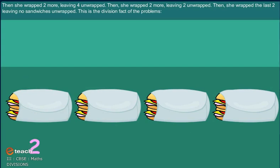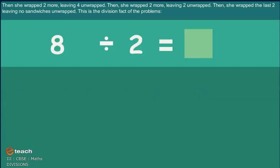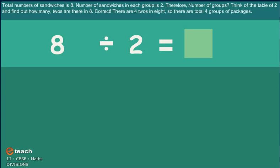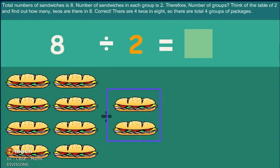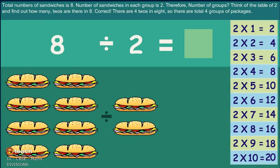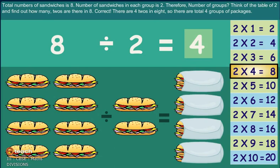This is the division fact of the problem: total number of sandwiches, number of sandwiches in each group, and number of groups. Think the table of 2 and find how many 2s are there in 8. Correct! There are 4 twos in 8. So there are total 4 groups or packages.